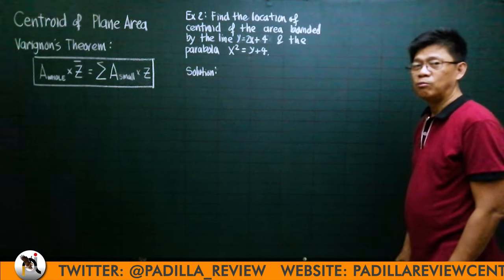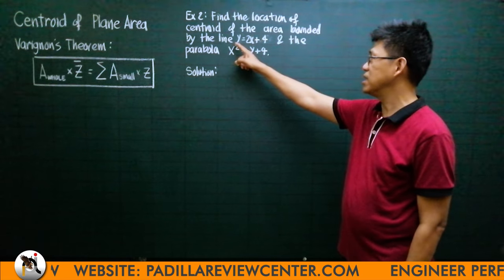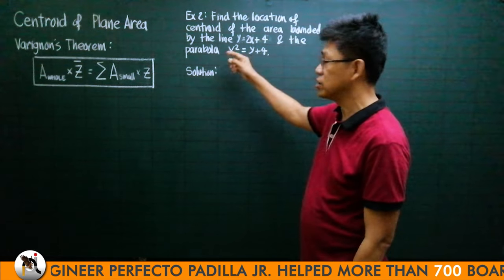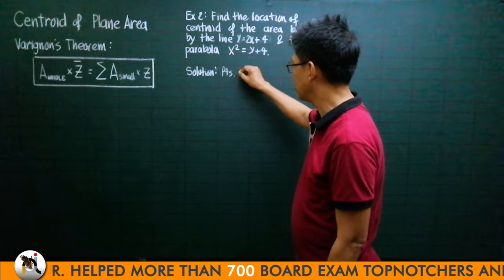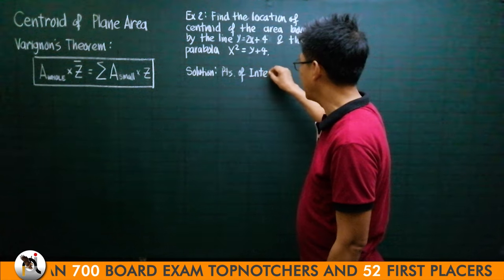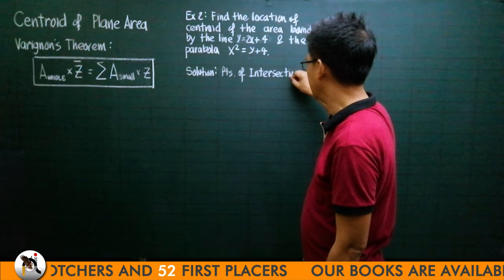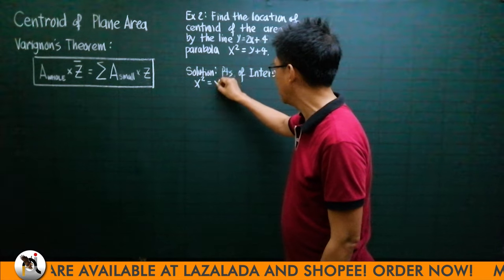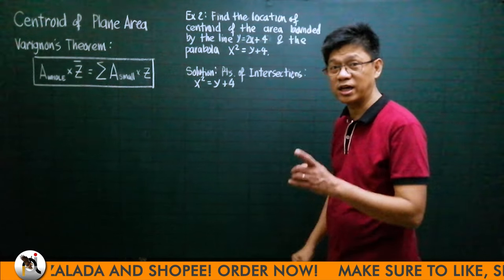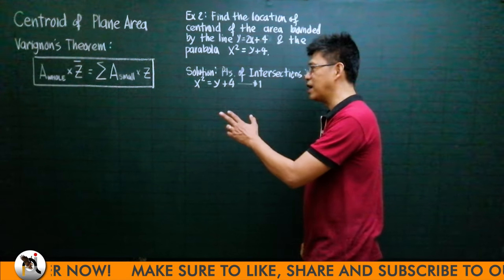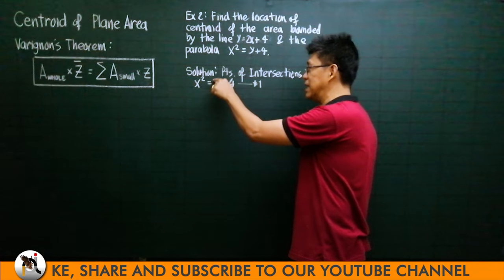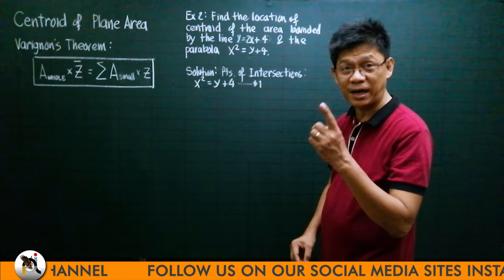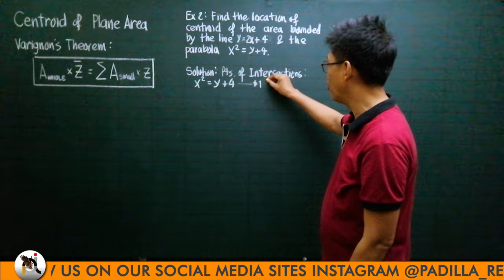We are asked to find the location of the centroid of the area bounded by a line and a parabola. The first thing to do is to solve for the points of intersection, for plotting purposes and for our limits. The equation of the parabola is x² = y + 4 — call it curve 1. This parabola is positive in the linear y, meaning it opens upward.